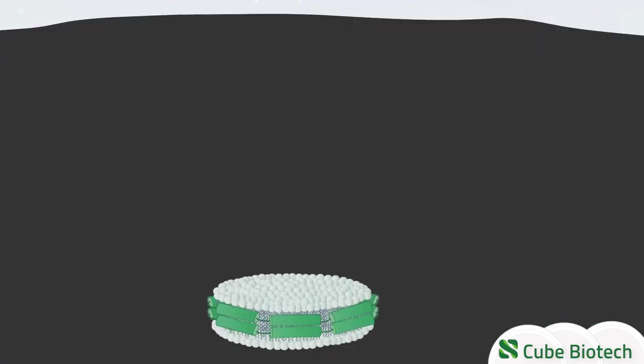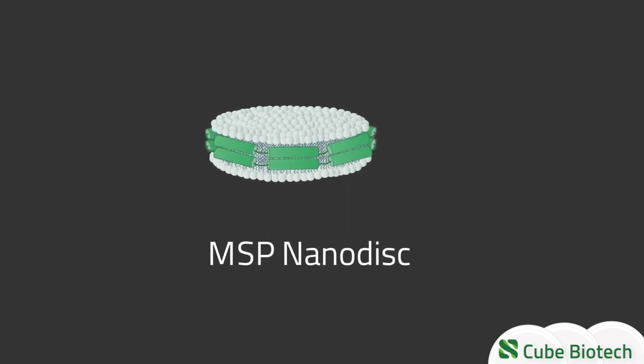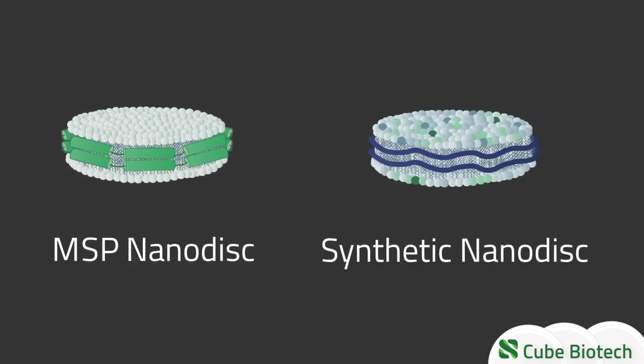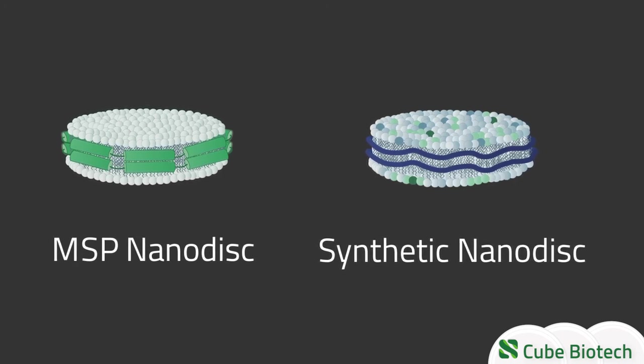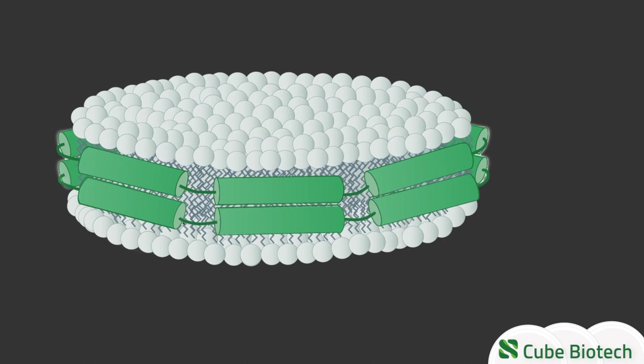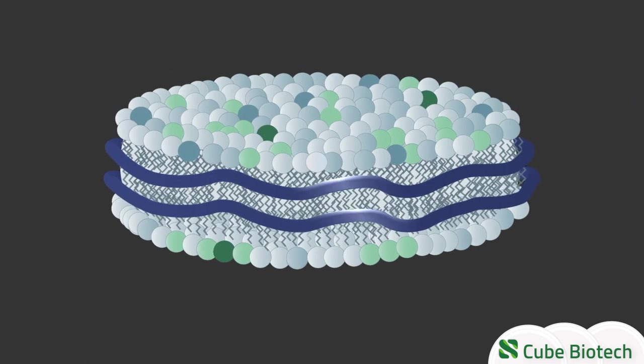The two main categories of nanodiscs are membrane scaffold protein nanodiscs, or in short MSP nanodiscs, and synthetic nanodiscs. In accordance to their names, MSP nanodiscs are held together by membrane scaffold proteins, whereas synthetic nanodiscs use a synthetic belt.